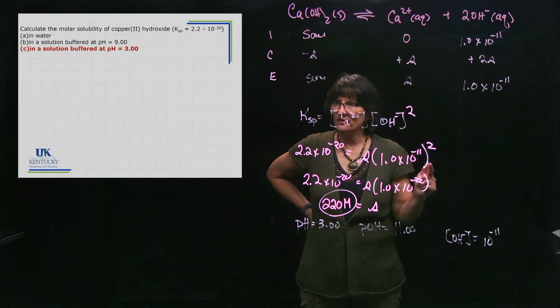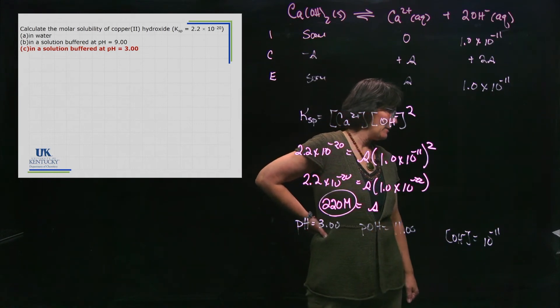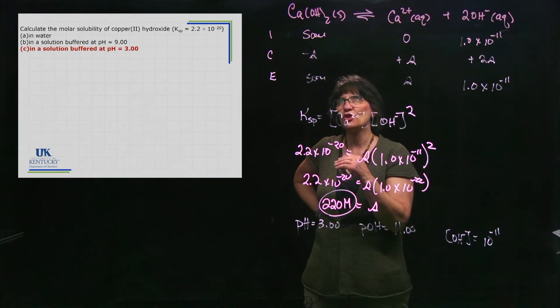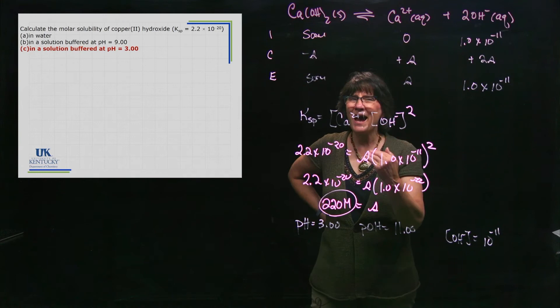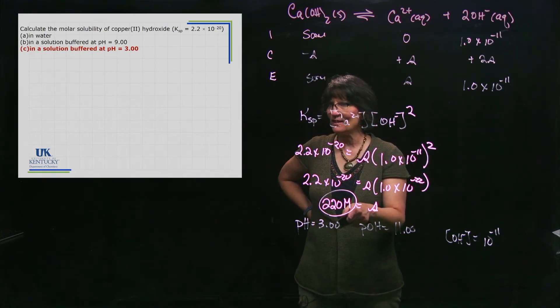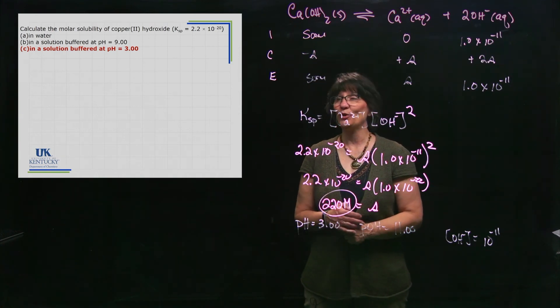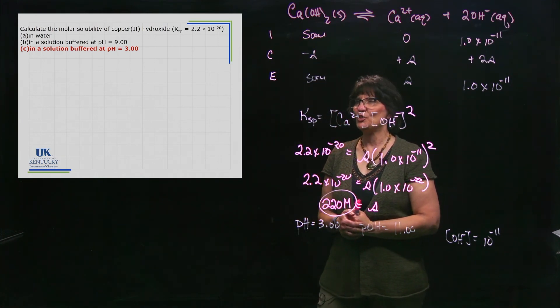In the previous problem in basic solution, the solubility was 2 × 10⁻¹⁰. Now we added it to an acid and we get the solubility up to 220. That is what you call increasing the solubility as you add an acid.